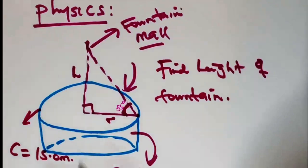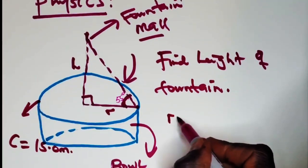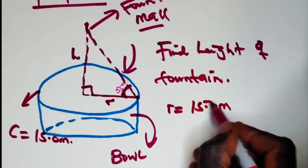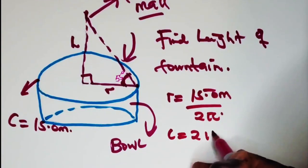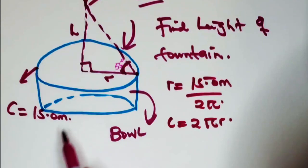And then to the center gonna be your R. So we need to find that R to get the height. So the R is always 15 over 2 pi, because the circumference is always 2 pi R.